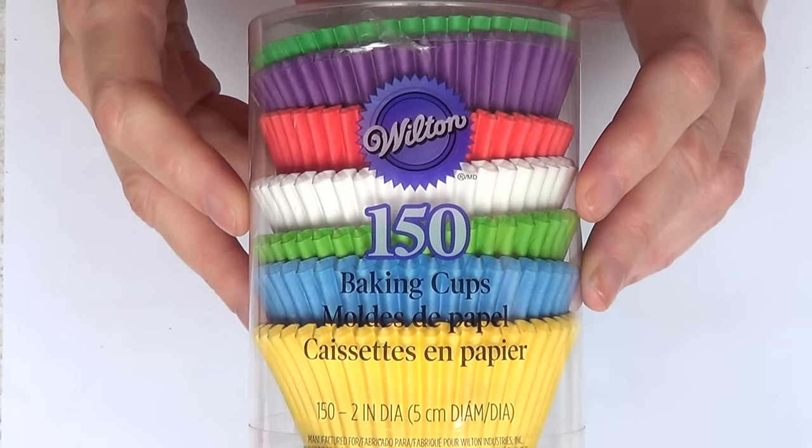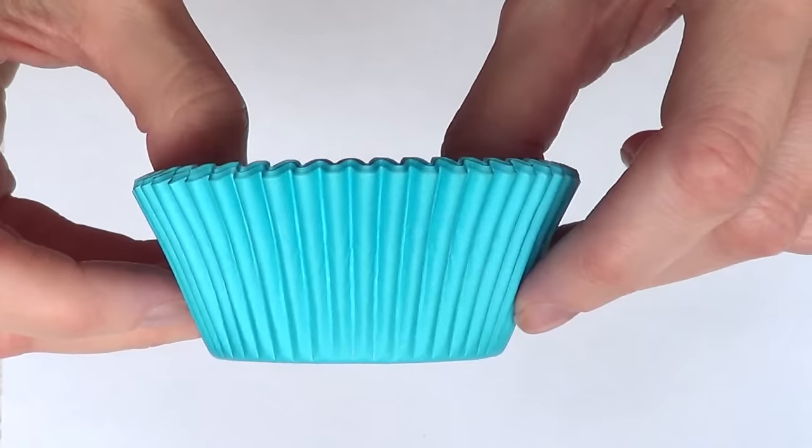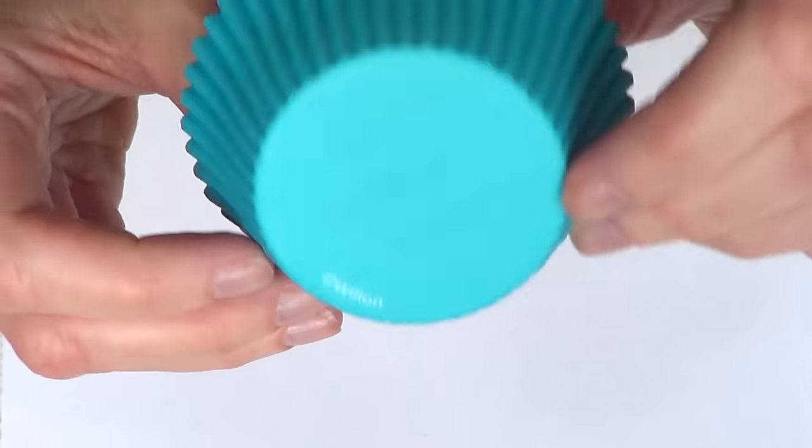For this one we're gonna start with the design of the topper and for that we're gonna be using baking cups. I'm using the Wilton brand for this one.